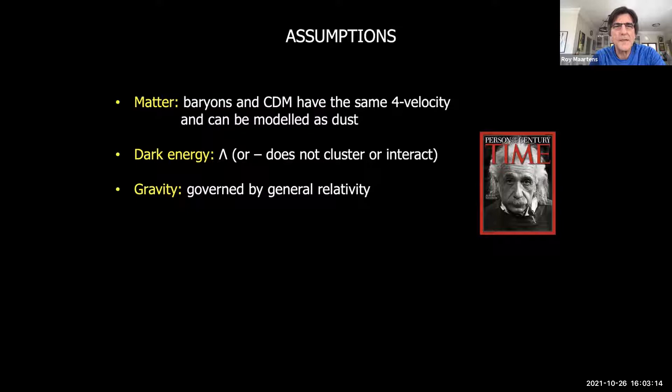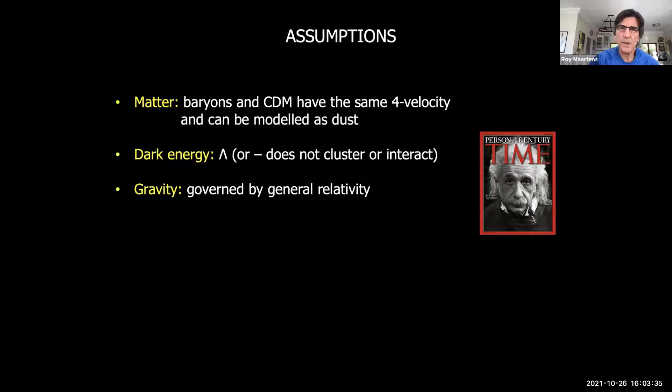First of all, regarding the matter content of the universe, I will assume that baryons and cold dark matter have the same four-velocity and can both be modeled as dust. This excludes very small scales with shell crossing and velocity differences, but when we're testing the cosmological principle we're mainly working at large scales. In terms of dark energy, we typically just assume a cosmological constant, though many results go through if you have dynamical dark energy that does not cluster or interact with dark matter.